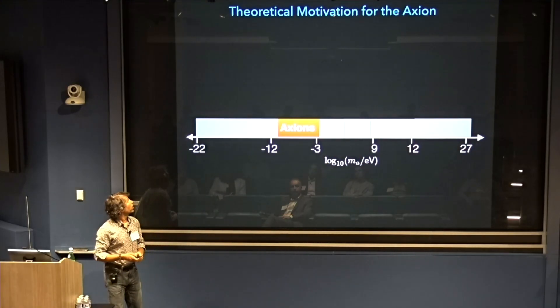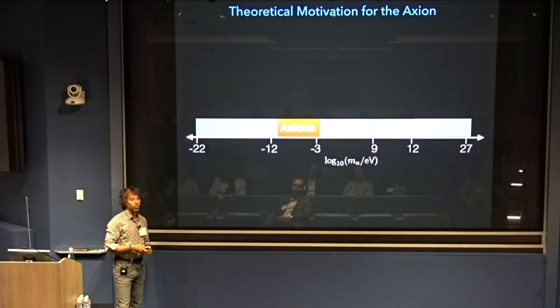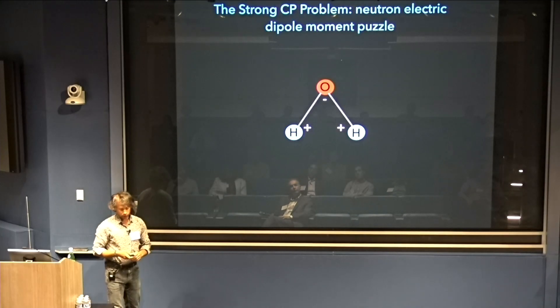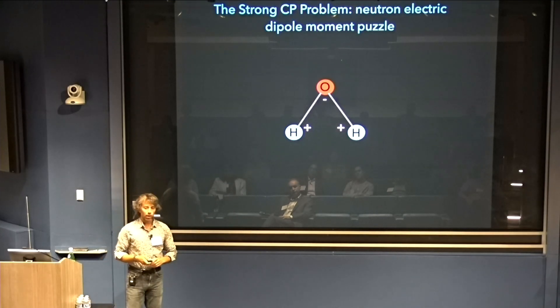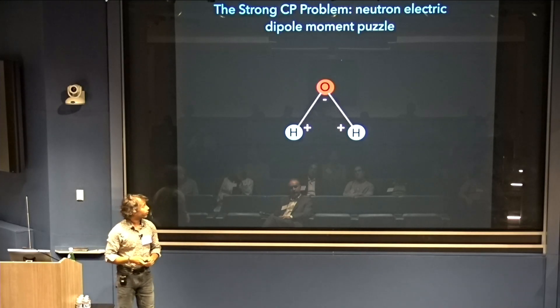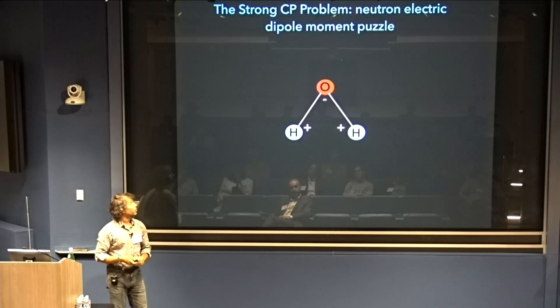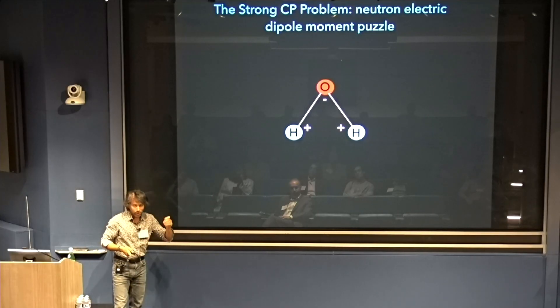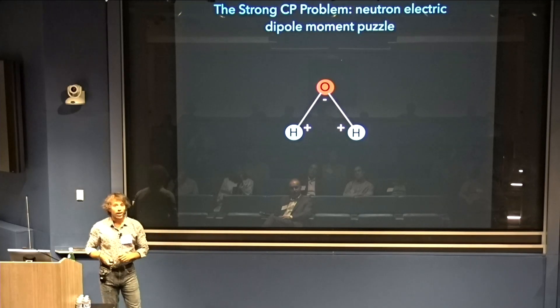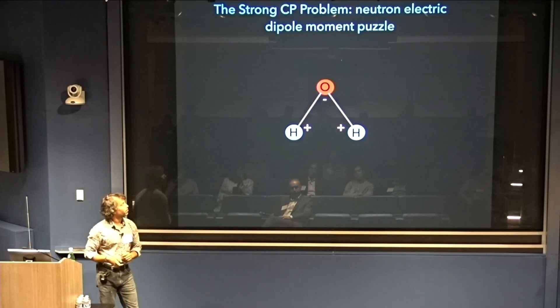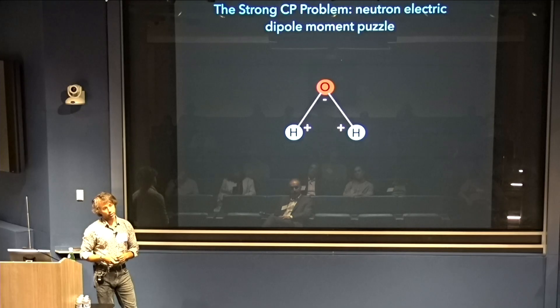Now let's talk about the theoretical motivations for the axion. The original motivation for the axion is the strong CP problem. I'll describe it as the puzzle of the neutron electric dipole moment, which I'll start to explain by looking at water, where there's no such problem.